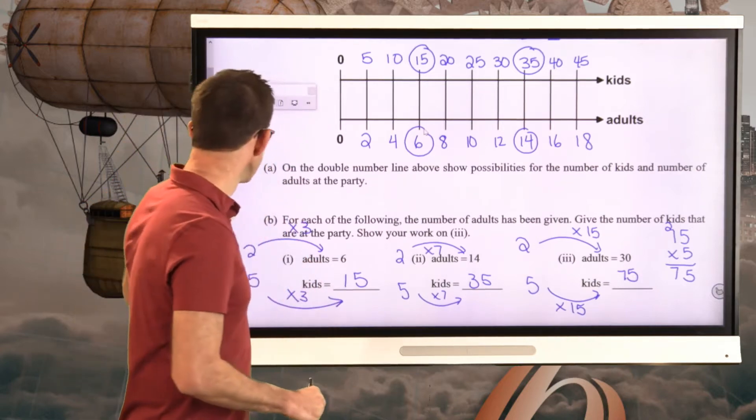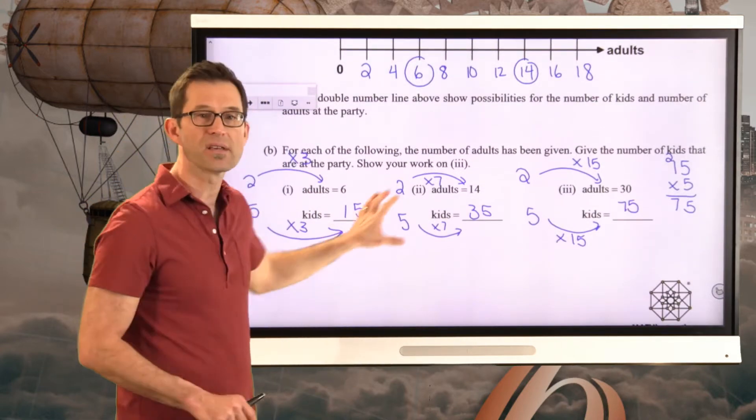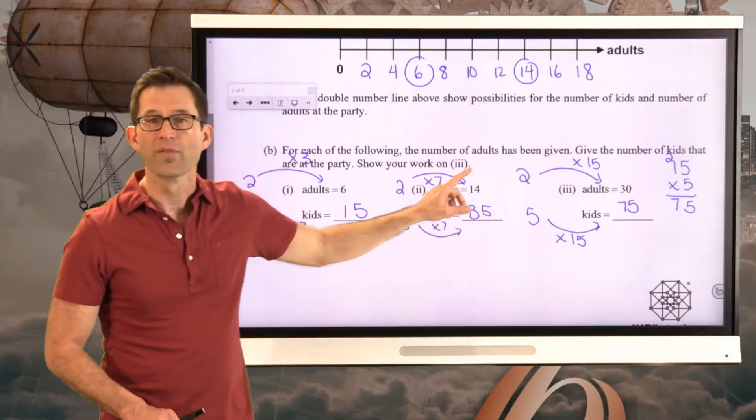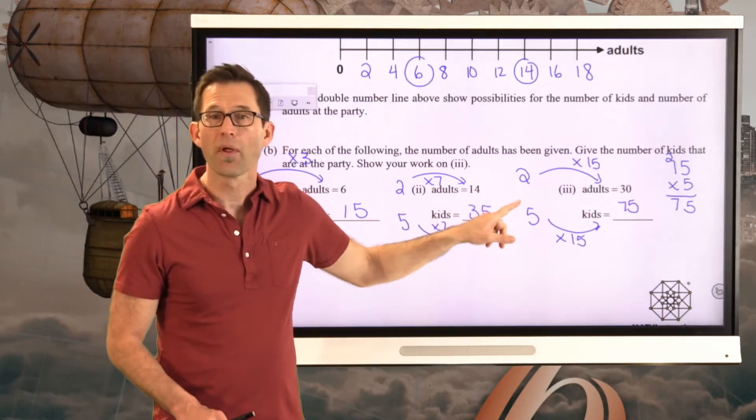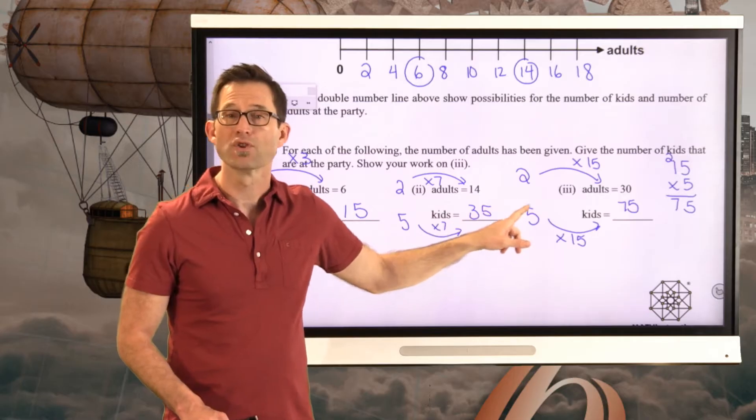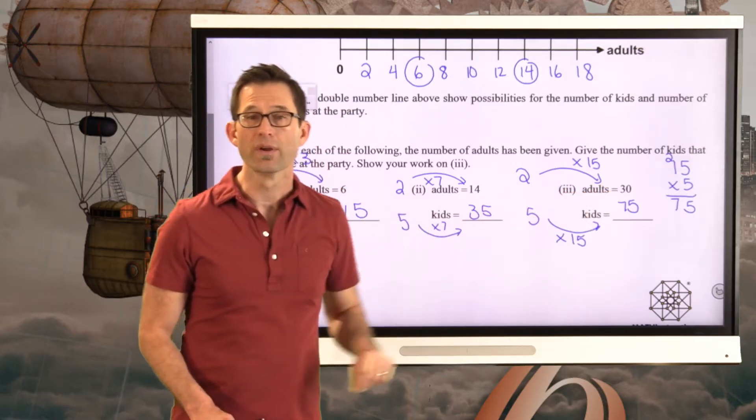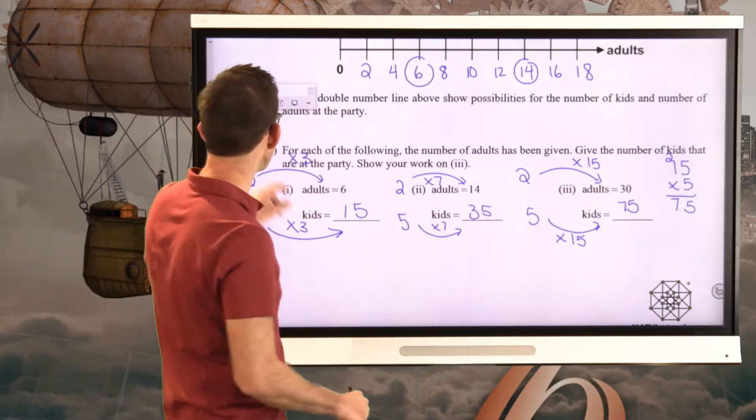And it's important to understand that basic idea. That if we've got the simplest ratio, we can multiply both of those numbers in the ratio to get an equivalent ratio. Let's keep working on this.